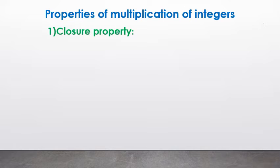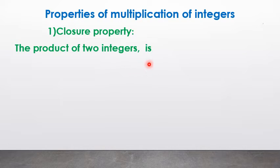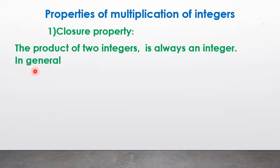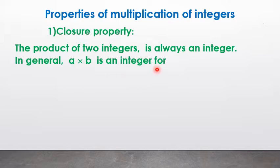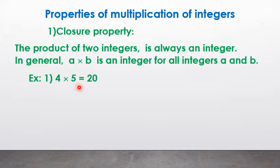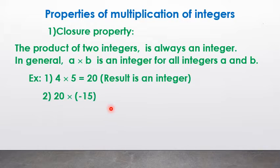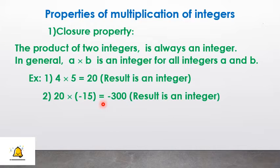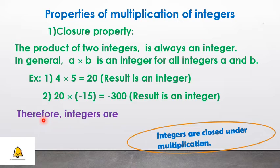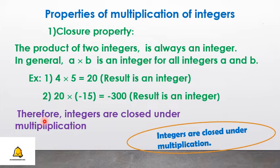Properties of multiplication of integers. The first is the closure property: the product of 2 integers is always an integer. In general, a × b is an integer for all integers a and b. For example, 4 × 5 = 20. Another example, 20 × (−15) = −300. Therefore, integers are closed under multiplication.